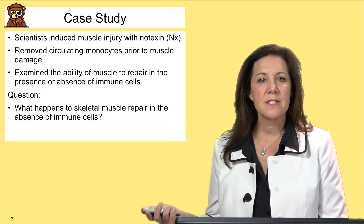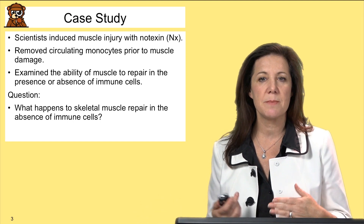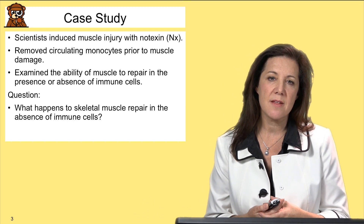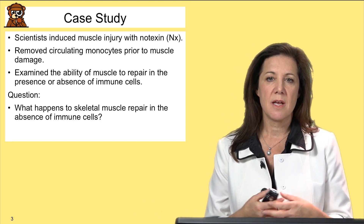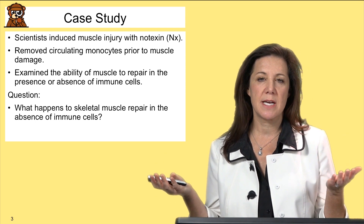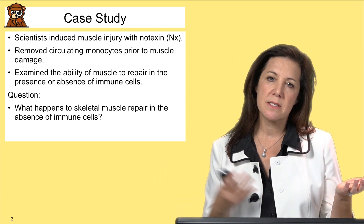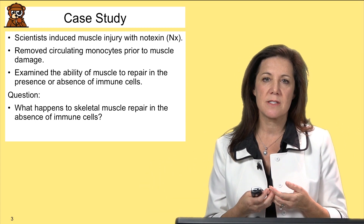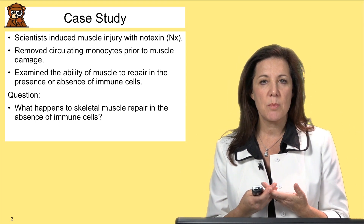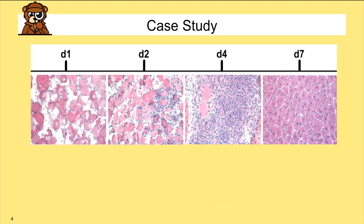Let's go to a case study. Scientists experimentally induced muscle injury with notexin, which is similar to cardiotoxin, and then examined two conditions: muscle repair in the presence and absence of circulating monocytes. Those circulating monocytes eventually enter the muscle and become macrophages. The question asked was: what happens to muscle repair in the presence or absence of these cells?